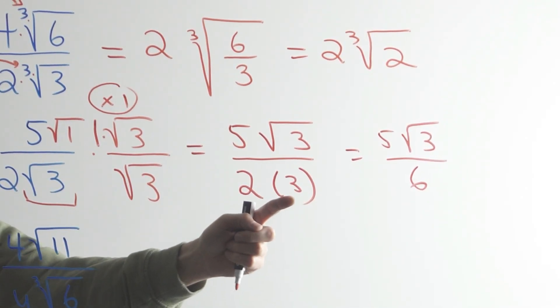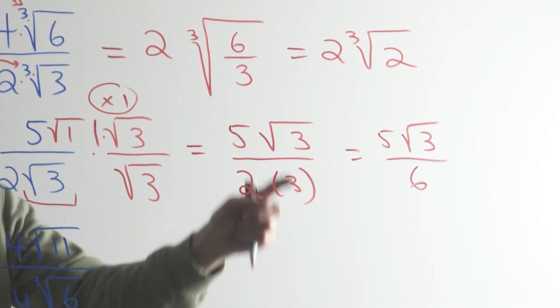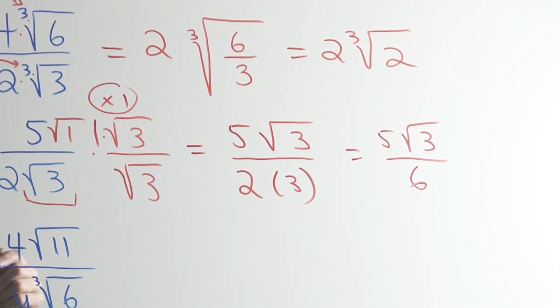Caution, caution. See the three here and the three there? They can't be divided. So don't divide this three into that, because this three is sort of outside the radical, and this three is inside the radical.